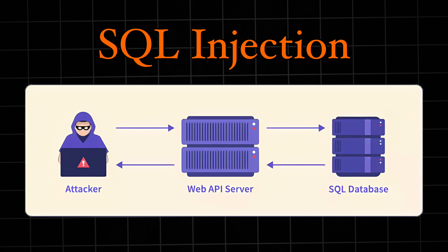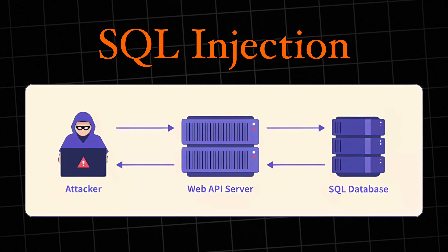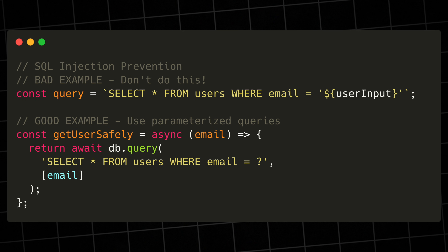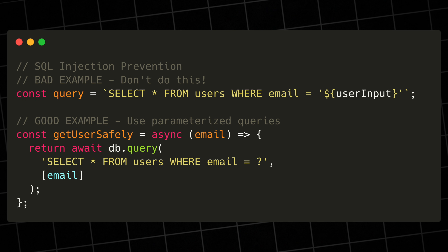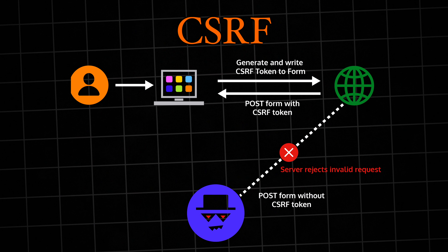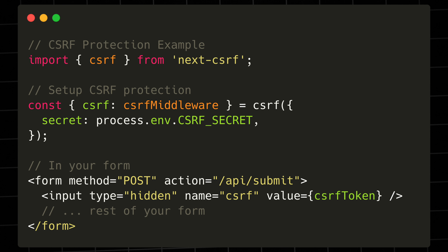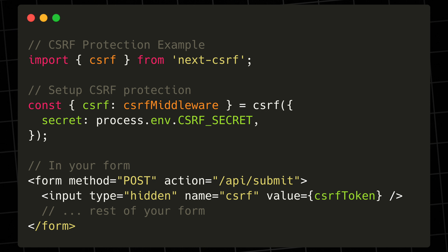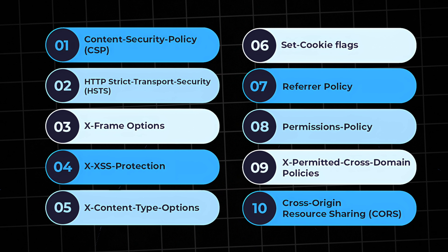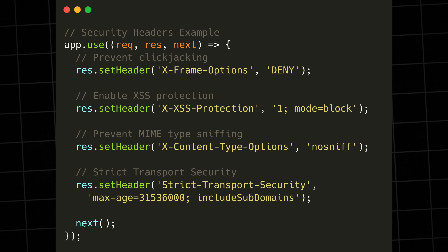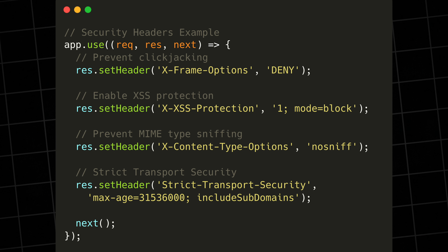SQL injection remains one of the most common attacks. The solution is simple: never construct SQL queries by concatenating strings. Always use parameterized queries or an ORM like Prisma or Sequelize — they handle SQL escaping for you and make your code more maintainable. Cross-site request forgery, or CSRF, happens when malicious sites trick users into making unwanted requests to your server. Implement CSRF tokens in all your forms and state-changing API endpoints. Many frameworks include CSRF protection out of the box, so use it. Finally, let's talk about security headers — your first line of defense against many common attacks. These headers should be configured on every production application. Tools like Helmet.js can help you set these up correctly.